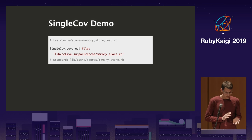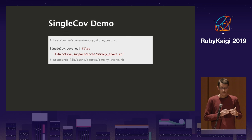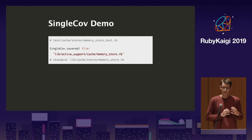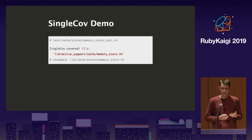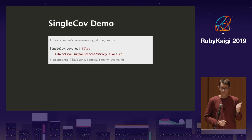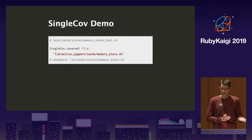SingleCov also reminds you when your test structure is bad because it tries to guess where the file under test should be. If it's not a one-to-one mapping — your test folder should map your lib folder — it asks what you're doing. It encourages a good test structure, which makes contributing to your project easier. If someone can open the user file and go directly to the user test, that works nicely. Some editors also let you do Command-Shift-T to flip between code and test, so it all works together.